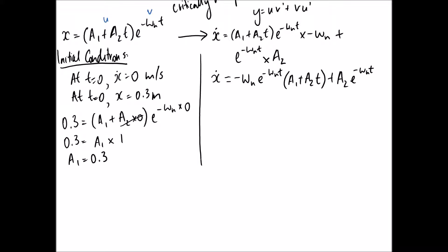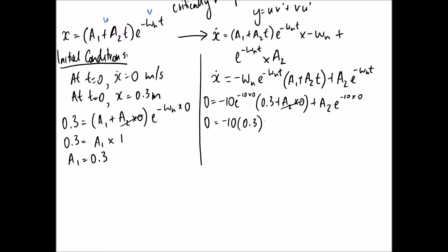We apply the condition that at t = 0, x-dot = 0. Substituting in, with ωn = 10 and A1 = 0.3, the exponentials become one and the A2·t term drops out. We get 0 = −10·(0.3) + A2, so A2 equals 3.